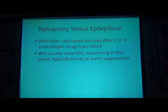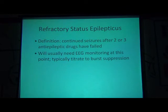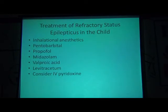Refractory status epilepticus: defined as continued seizures after two or three antiepileptic drugs have failed. EEG monitoring is needed at this point, typically titrating to burst suppression pattern. Drugs for refractory status epilepticus: inhalational anesthetics, pentobarbital, propofol infusion, midazolam, valproic acid, levetiracetam, and consider pyridoxine.